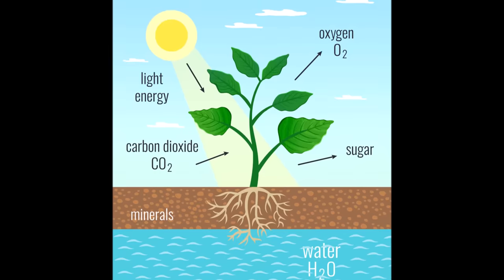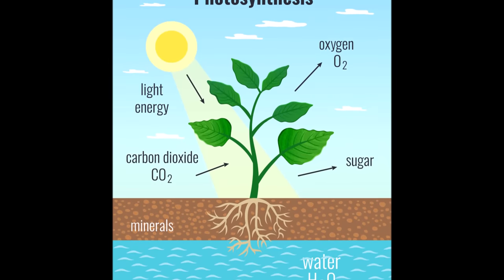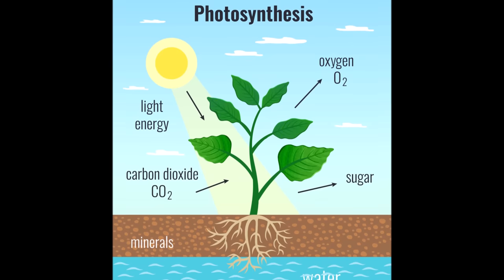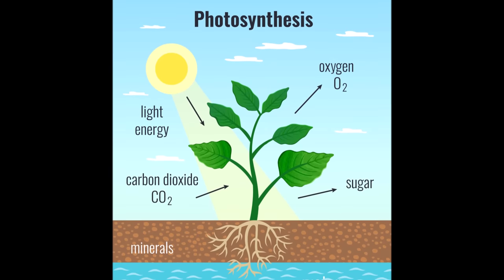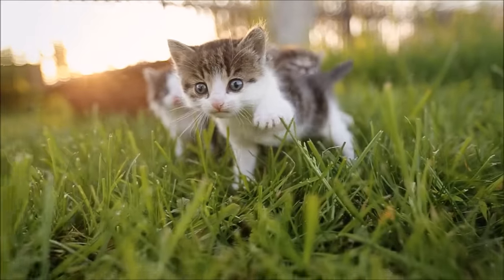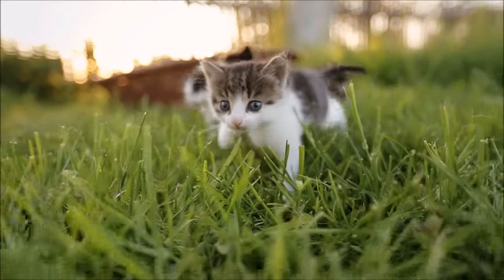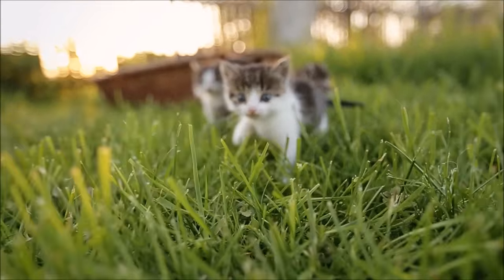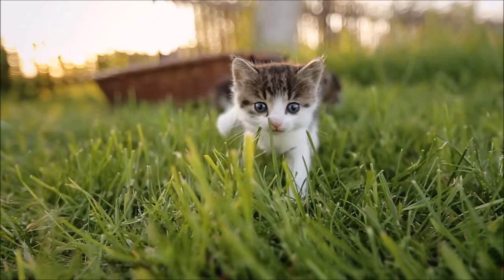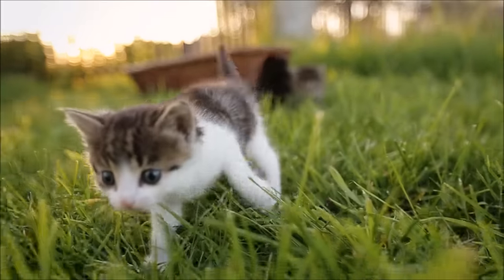Without plants performing photosynthesis and converting water, light, and carbon dioxide into sugars and oxygen, humans and all the animals on Earth would not be able to survive. I hope you enjoyed learning about photosynthesis today. Goodbye till next time!